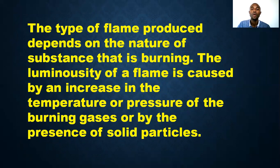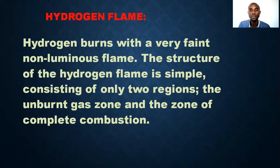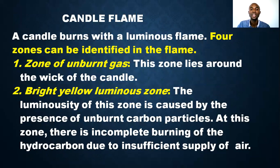Let's look at some flames. First is the hydrogen flame. Hydrogen burns with a very faint, non-luminous flame. The structure of hydrogen flame is simple because it consists of only two regions: the unburned gas zone and the zone of complete combustion.